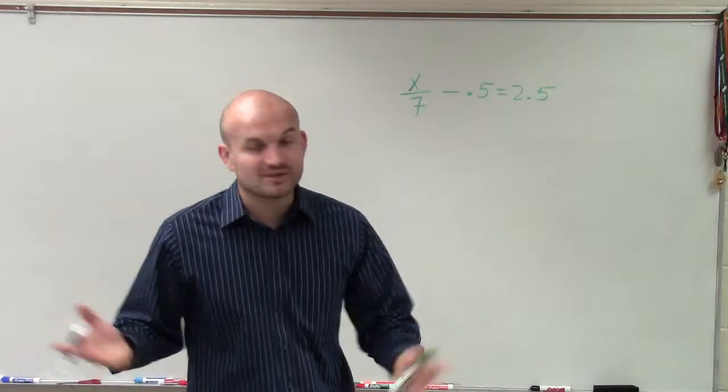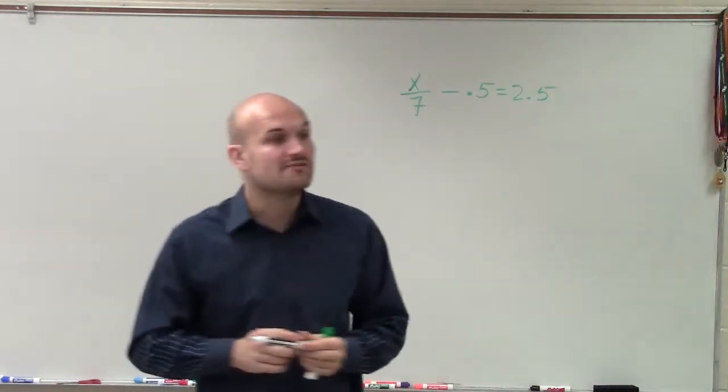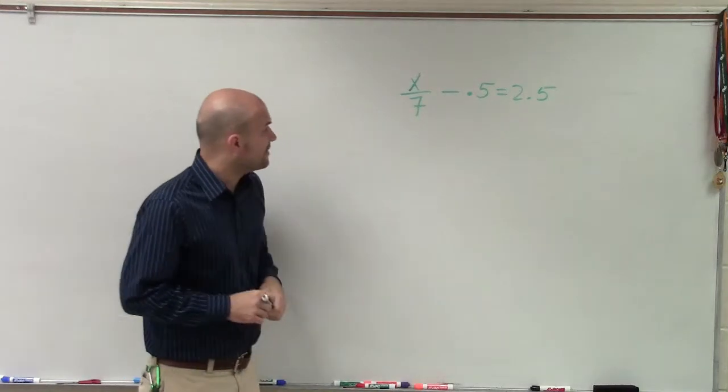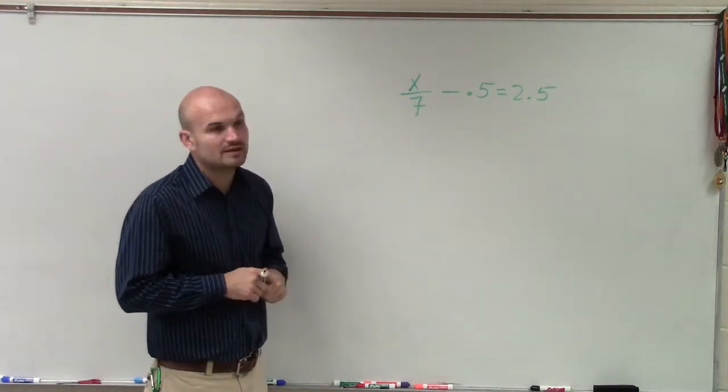What we want to do is isolate the variable, get the variable by itself. So therefore, we need to undo what's happening to the variable. So here we have x divided by 7 minus 0.5 equals 2.5.